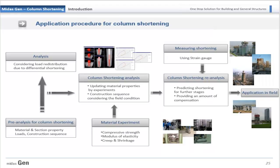In practice, the procedure for column shortening is: firstly, perform initial column shortening analysis with code-based material and section properties, loads, and construction sequence. Observe analysis results of load redistribution. Then update material properties by material experiments of compressive strength, modulus of elasticity, creep and shrinkage. Rerun column shortening, predict shortening of further stages, compare with shortening on site, and then update the model by providing an amount of compensation to be applied in the field.